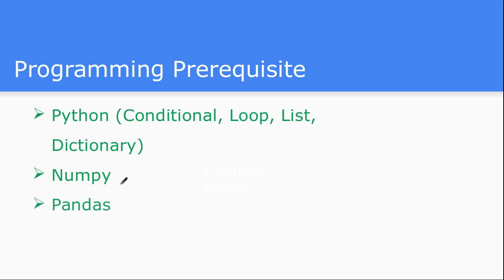There is one library very famous among data science people — that is Pandas. Pandas is useful for data manipulation and data wrangling: initial-level data merging and data joining. This library is very popular among the data science community.